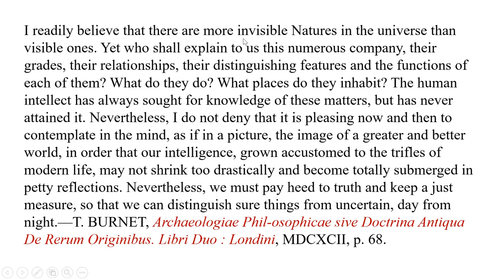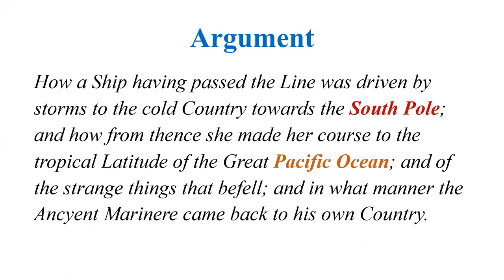The Argument describes how a ship, having passed the equatorial line, was driven by storms to the cold country towards the South Pole, and how from thence she made her course to the tropical latitude of the great Pacific Ocean — and of the strange things that befell, and in what manner the Ancient Mariner came back to his own country.